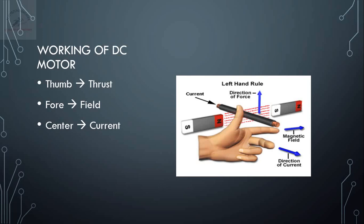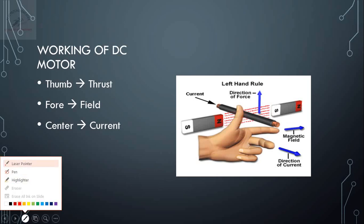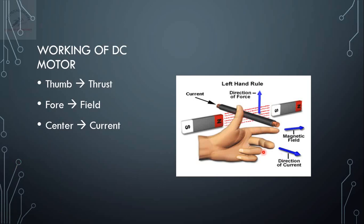So with this, let us try to re-understand Fleming's left hand rule. Our forefinger gives us the direction of the field, and the center finger gives us the direction of the current, so the thumb finger gives us the direction of the force.